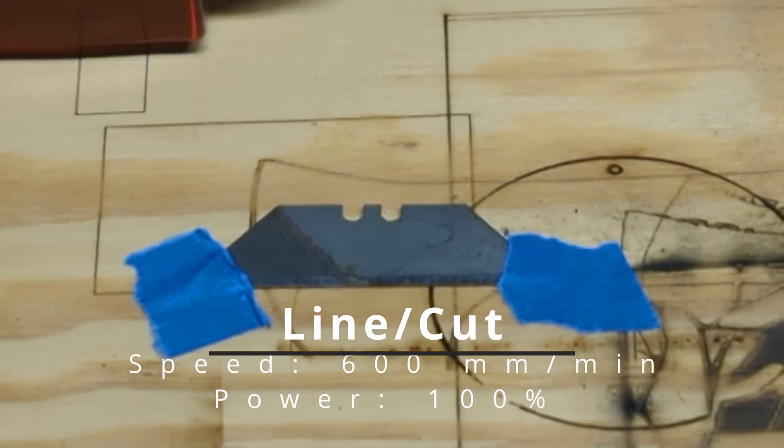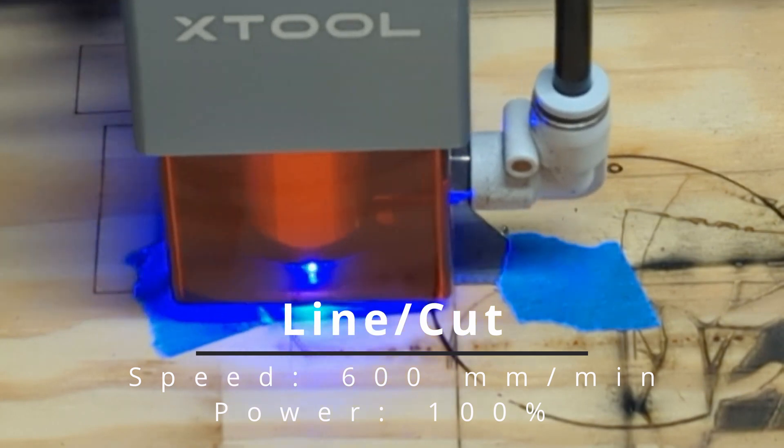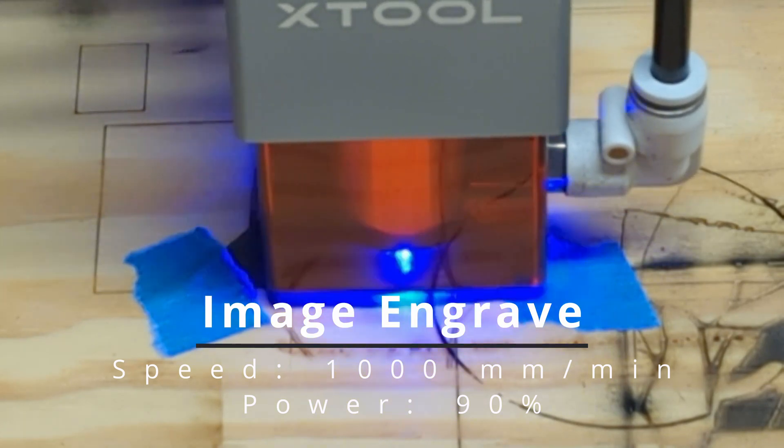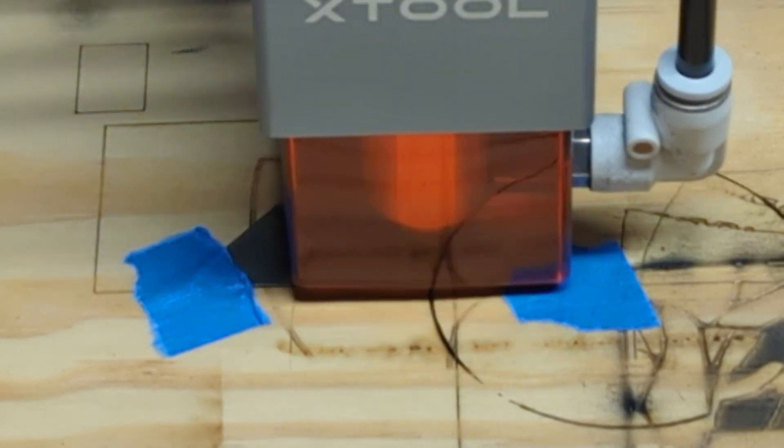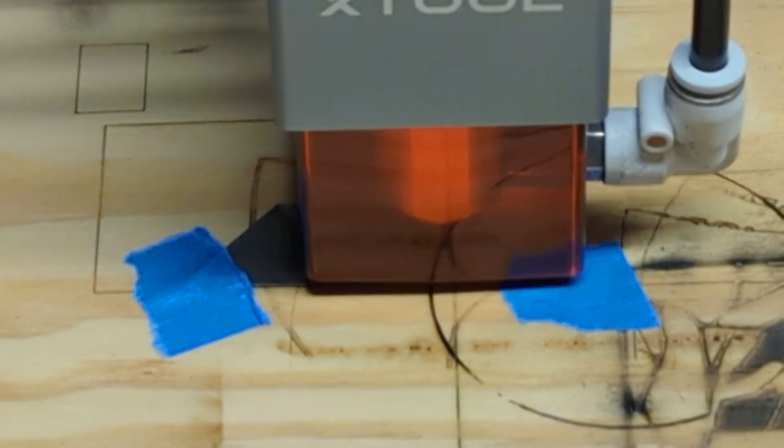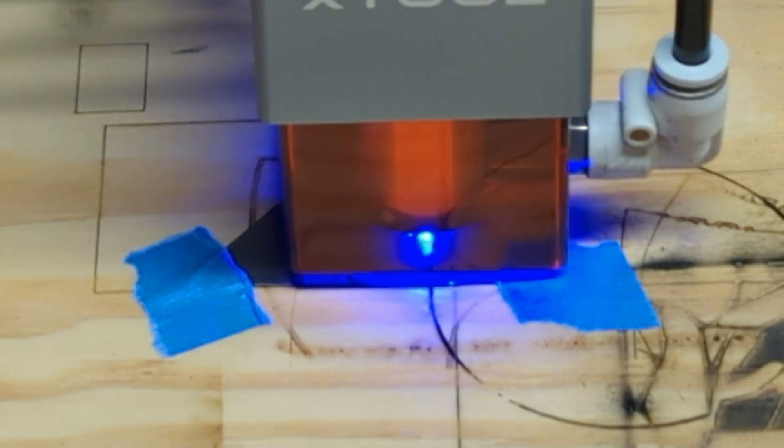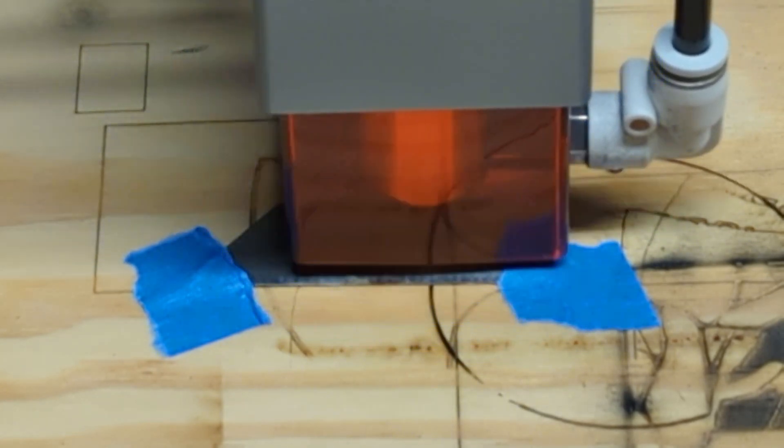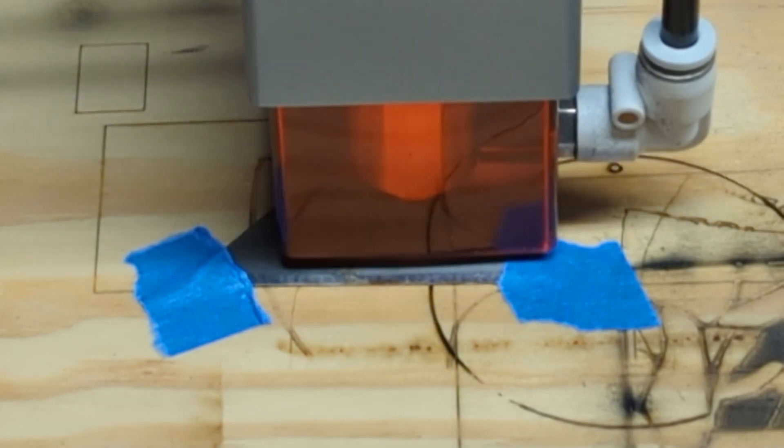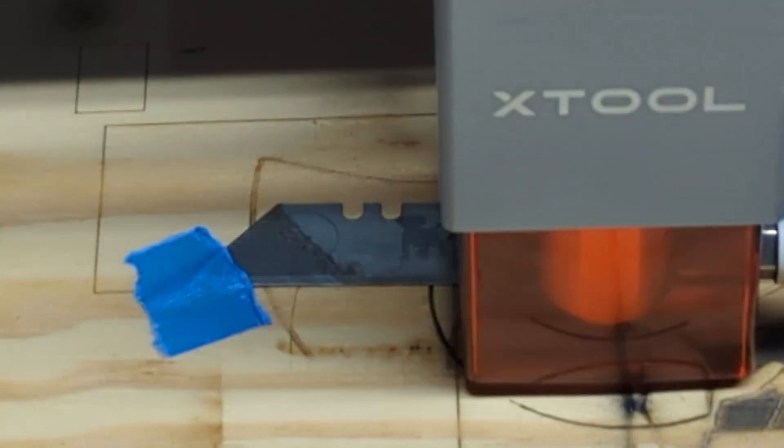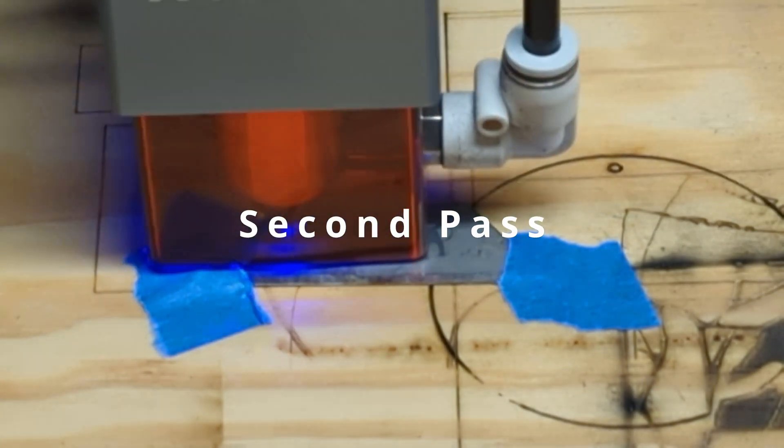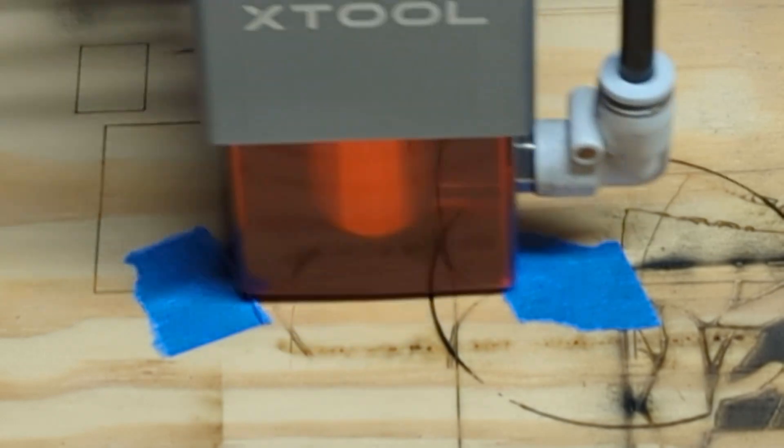First up we have a stainless steel razor blade. You can see I've put the settings that I used at the bottom here. Some of these clips are sped up but most of them are in real time just so you can get an idea of how long it may take you to use the laser on these materials.